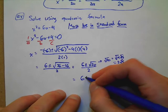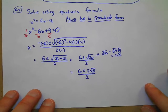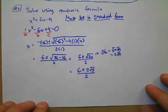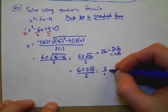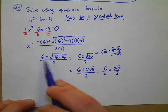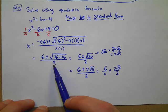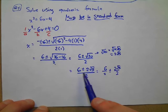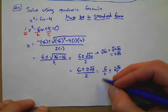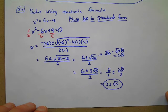So this becomes 6 plus or minus 2√5, all over 2. Now we'll simplify: 6/2 plus or minus 2√5/2. The reason I asked you to hold off on simplifying earlier is that some students would only divide the 6 by 2 and forget that the square root is also being divided by 2. When you break up a fraction, the numerator breaks up over addition and subtraction — so both 6 and 2√5 are divided by 2. We get 3 plus or minus √5. Those are two solutions in simplest radical form.